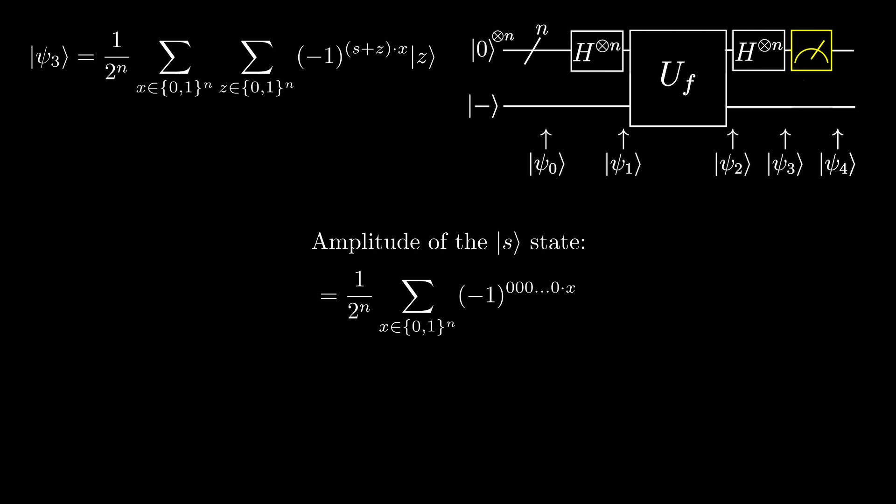Now, in the exponent, we have all zeros dotted with x. This will equal 0, since all the zeros will cancel out all the x's at each position. Applying the power means the state becomes 1 over 2 to the power of n times the sum over all x's, 1.